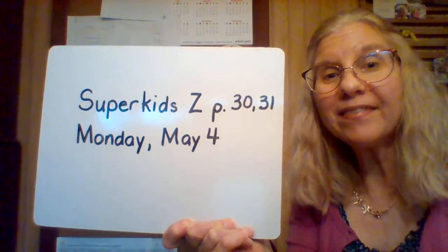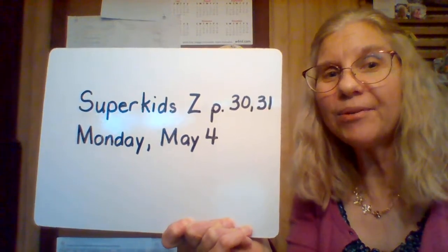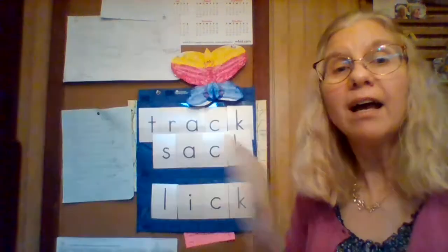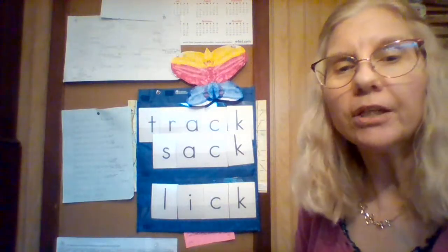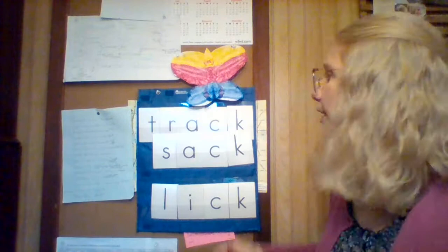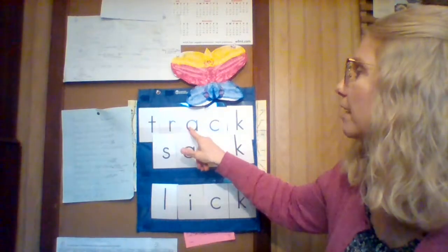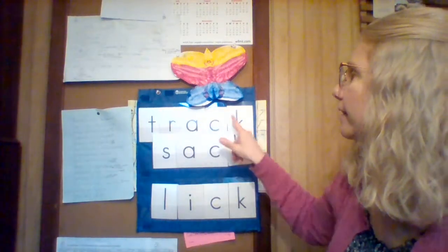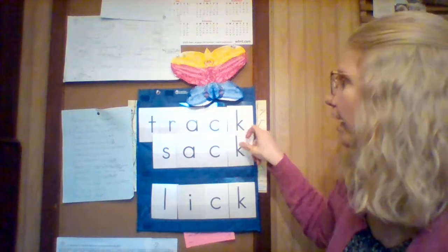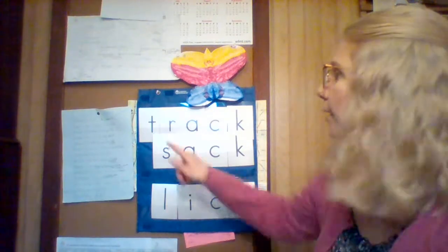It's time for Super Kids. Let's get started with our alphabet letters. Take yours out and find the T, R, A, C, and K first. When you have all those, you can start the video again and we'll sound that out. We are going to add some different vowels in the middle. Ready?